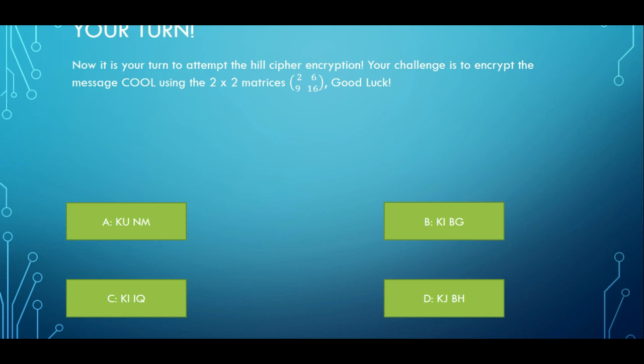So it's your turn now. Basically I want you to attempt the Hill cipher encryption and I want you to encrypt the message COOL using the 2x2 matrix 2, 6, 9, and 60. You have 4 options here. Good luck, wish you all the best.